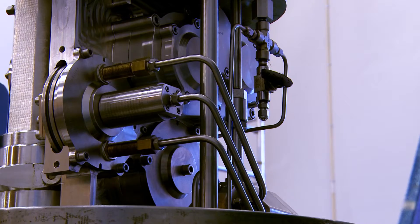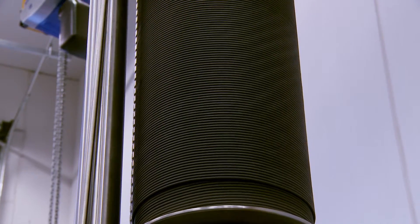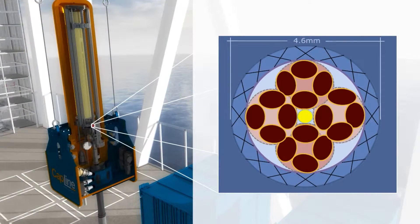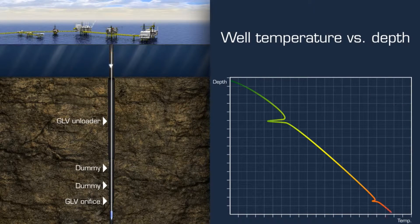Miniaturization of the winch is possible by replacing the traditional steel wire with a synthetic fiber rope. An optical fiber embedded inside the rope enables distributed sensing or can be used for signal transmission.